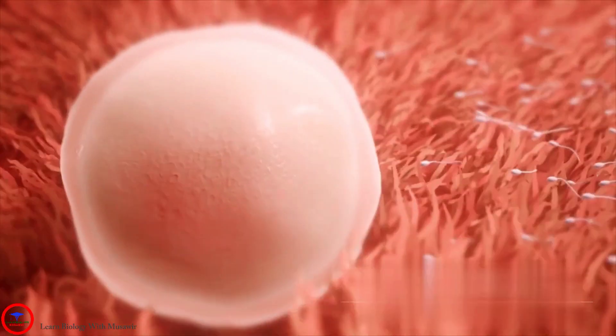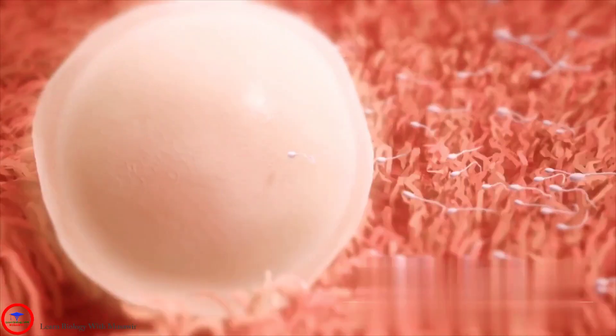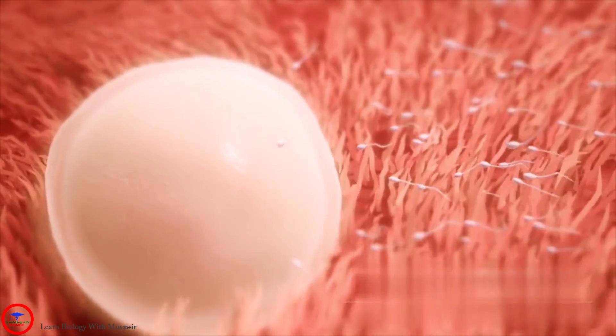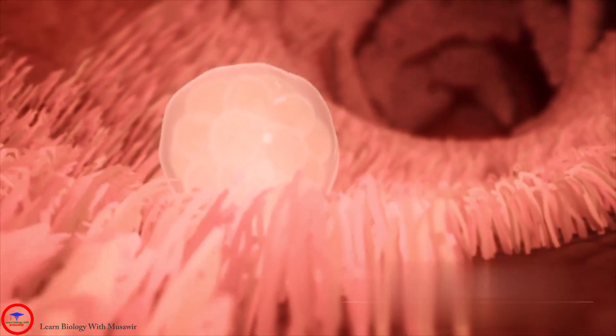If the egg is fertilized, the egg and sperm unite to form a one-celled entity called a zygote. As the zygote travels down the fallopian tube toward the uterus, it begins dividing rapidly to form a cluster of cells resembling a tiny raspberry.